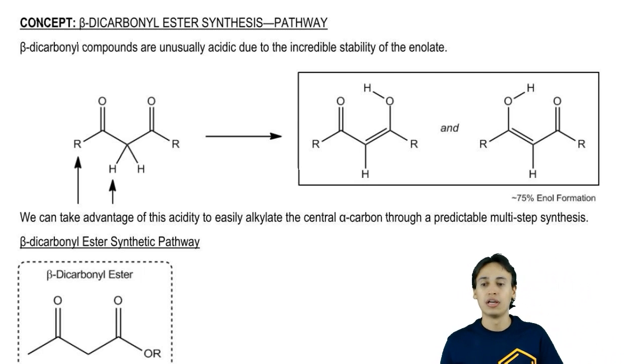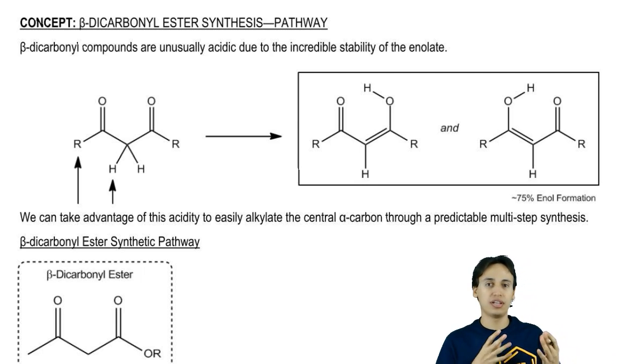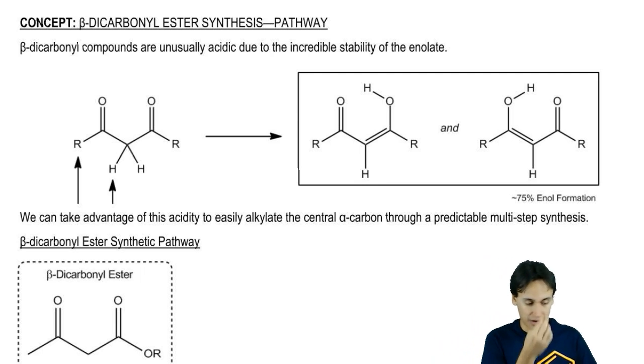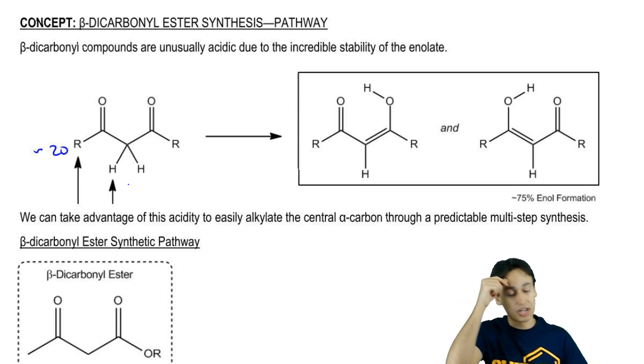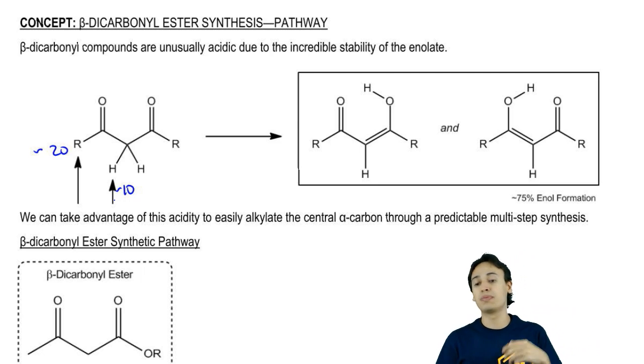We've already been over how beta-dicarbonyls are unusually acidic due to the incredible stability of the enolate. We talked about how the pKa of a normal alpha carbon is about 20, but that in a beta-dicarbonyl compound, it's closer to 10. It's very easy to deprotonate.